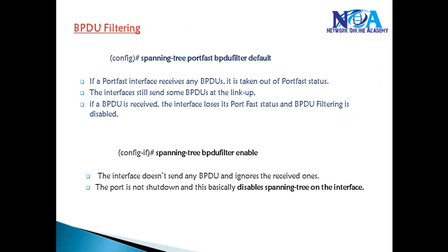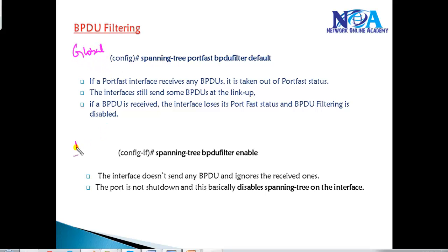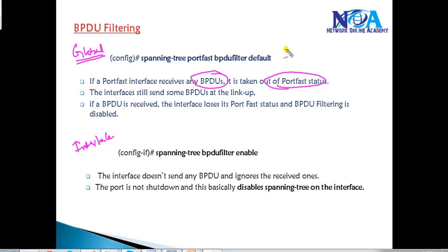BPDU Filter can also be enabled either globally in global configuration mode or on a specific interface. In both cases it will not put the port into error-disabled state — instead it re-enables spanning tree. In global configuration mode, when a Port Fast port receives a BPDU message, it removes the Port Fast status from that port, re-enables spanning tree, and BPDU filtering is also disabled. The interface will still send and receive BPDU messages normally.